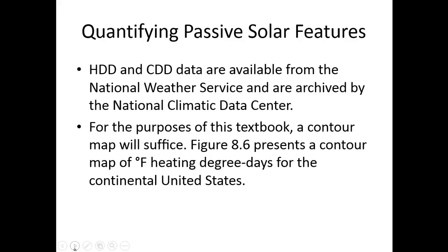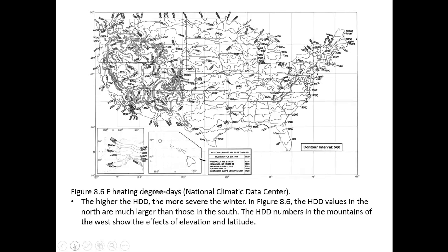Cooling degree day and heating degree day data are available from the National Weather Service and archived by the National Climatic Data Center. For this course, Figure 8-6 in your text presents a contour map of degree Fahrenheit heating degree days for the continental U.S. In Florida the contour level is around 500, while values approach 10,000 up in the north. The higher the heating degree day value, the more severe the weather; the mountains of the west also show the effects of elevation and latitude.